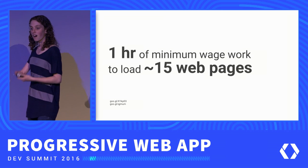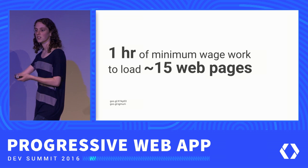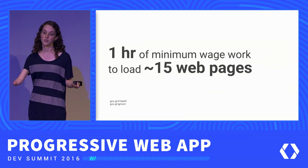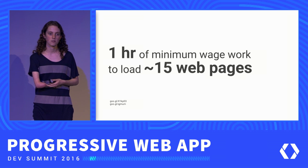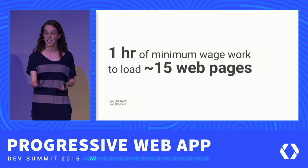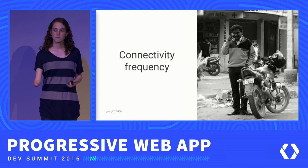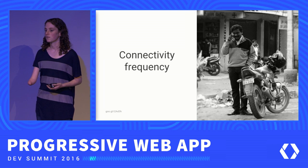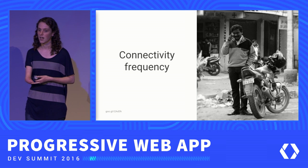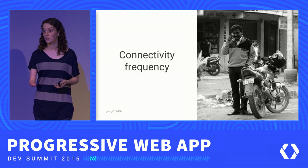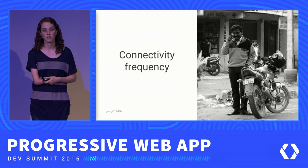What this really means is that the cost of data requires a trade-off. If they use one thing, they're not using something else. And they're constantly making these trade-offs to make sure that the data that they have is used in the best way possible. This results in the frequency of their connectivity really varying.